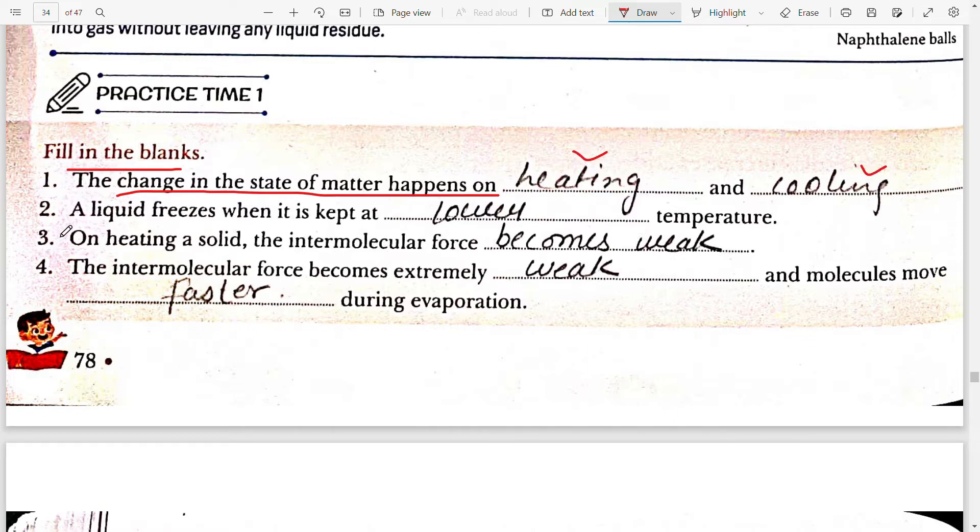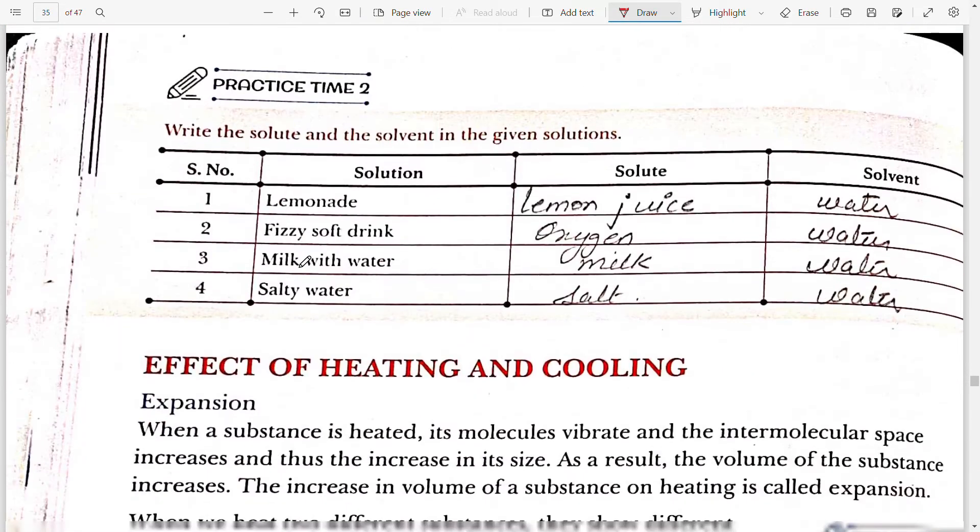First, the change in the state of matter happens on heating and cooling. Second, a liquid freezes when it is kept at lower temperature. On heating solid, the intermolecular force becomes weak. Fourth, the intermolecular force becomes extremely weak and molecules move faster during evaporation.